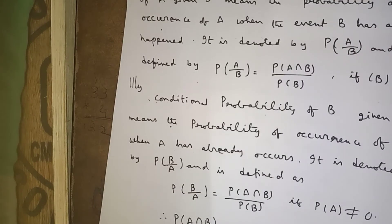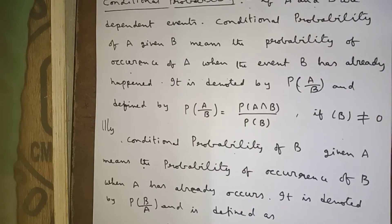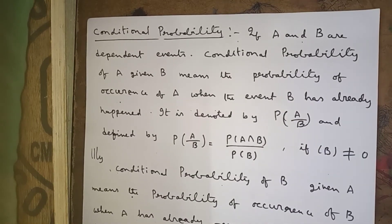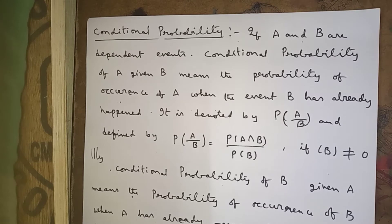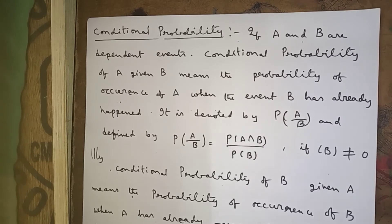Now, conditional probability. If A and B are two dependent events, the conditional probability of A given B means the probability of occurrence of A when the event B has already happened. It is denoted by P(A | B).